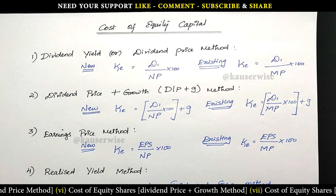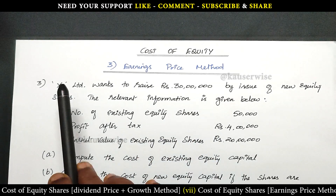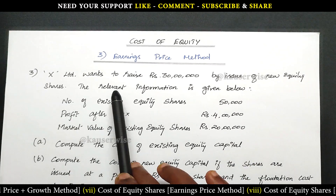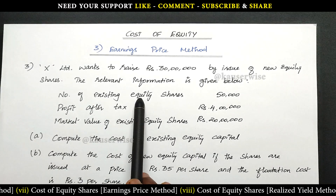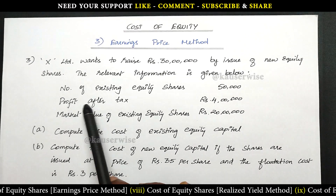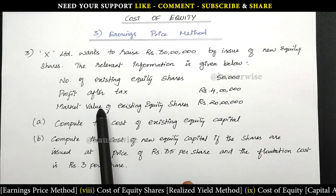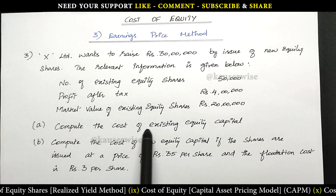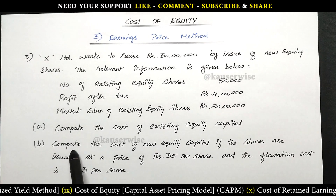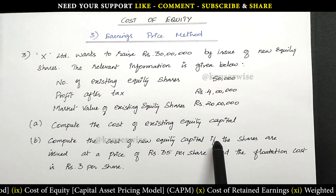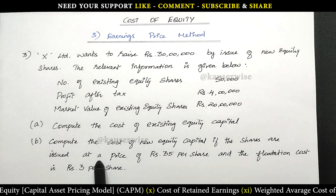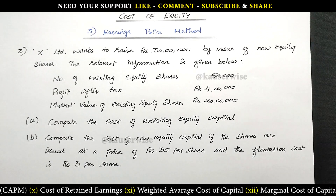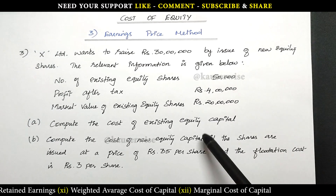Now let's see the numerical problem for better understanding. Earnings price method: X Limited wants to raise 30 lakhs by issue of new equity shares. The relevant information is given below — number of existing equity shares: 50,000; profit after tax: 4 lakhs; market value of existing equity shares: 20 lakhs. First, compute the cost of existing equity capital. Second, compute the cost of new equity capital if the shares are issued at a price of rupees 35 per share and the flotation cost is 3 rupees per share.